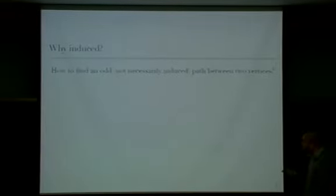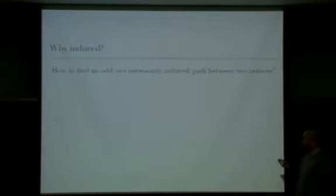Why induced? Suppose you want to find an odd path — given two vertices S and T, you want to find an odd, not necessarily induced path between S and T. If your graph is bipartite, it's easy because all paths between S and T have the same parity, so you just take the shortest path.